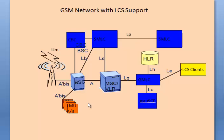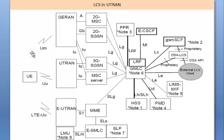These components can be physically distinct entities or part of an existing network component. For example, the Location Measurement Unit (LMU) can be part of the BTS itself. This is the location-based service architecture in UTRAN, taken from the 3GPP specification. Here you can see the Location Measurement Unit and the Gateway Mobile Location Center (GMLC).